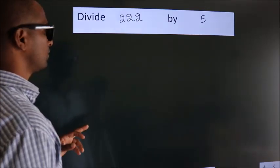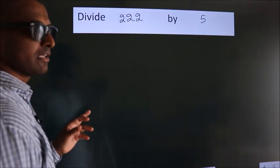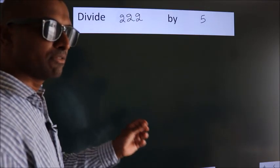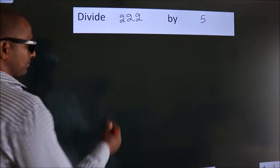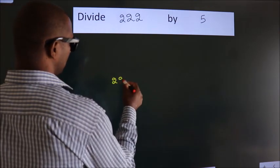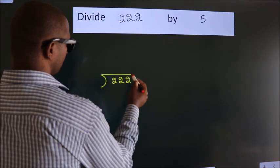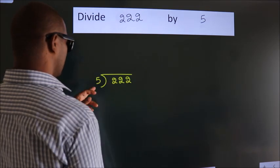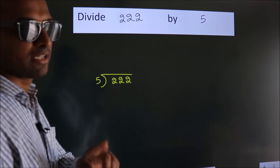Divide 222 by 5. To do this division we should frame it in this way: 222 here, 5 here. This is your step 1.